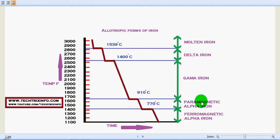The next one is the paramagnetic alpha iron, which occurs from 770 degrees Celsius to about 910 degrees Celsius.